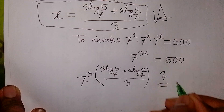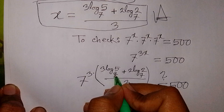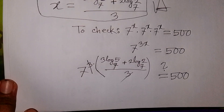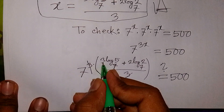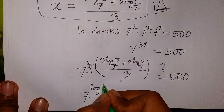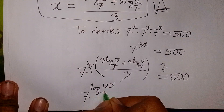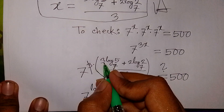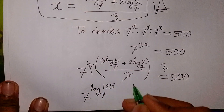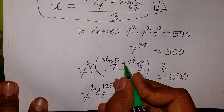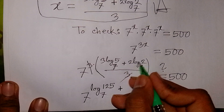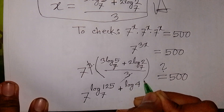Is it equal to 500? We see this 3 and this 3 will cancel. So we have 7 power (3·log 5 base 7), which is log 5 cubed, that means log 125 base 7. Plus this 2 will move to the power, so it will be log 2 squared, meaning log 4 base 7. Is it equal to 500?